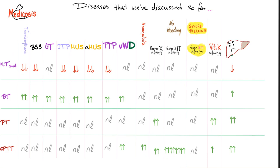Let's add liver disease to our table. Platelet count could be low; bleeding time could be high; PT and PTT are prolonged. It is also acceptable to say normal platelet count and normal bleeding time with prolonged PT and PTT.